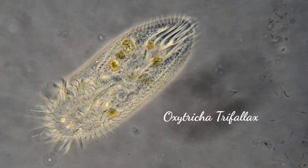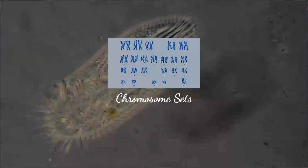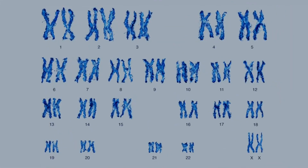Oxytricha triflax is particularly interesting as a eukaryote because it doesn't have just one nucleus — it can often have two nuclei, and within these nuclei the DNA of the cell can often be extremely fragmented. Most cells in biological systems have a reasonable number of chromosomes; for example, humans have 23 pairs of chromosomes, which is actually a fairly large number compared to most other cells. But oxytricha triflax crushes that number and can sometimes have thousands of chromosomes.